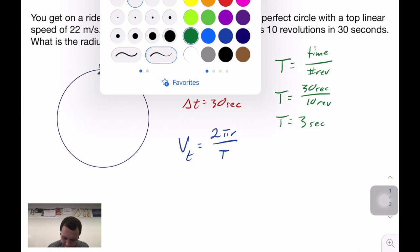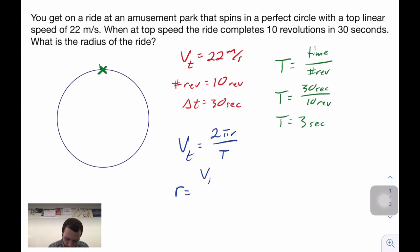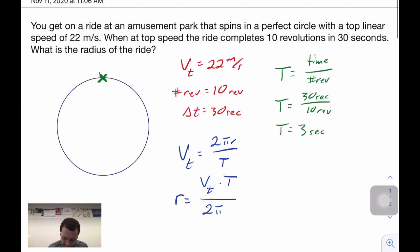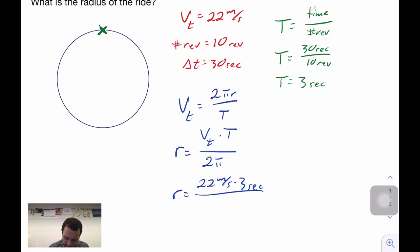Using that time period and using our tangential velocity, we're going to rewrite this formula to solve for our radius. So we're going to be our tangential velocity times our period divided by 2π. In order to solve this, now we're just plug and chug. So we're 22 meters per second at 3 seconds for our time period divided by 2π. And when you plug that into your calculator, you end up getting 10.5 meters.